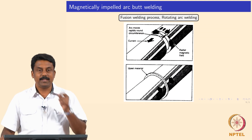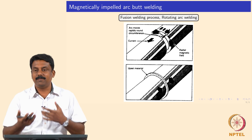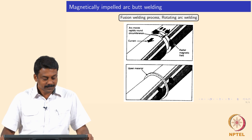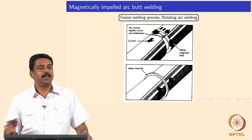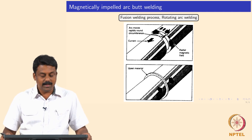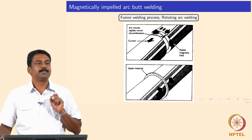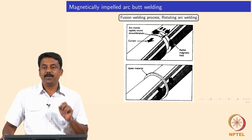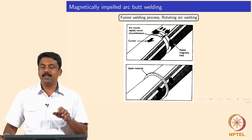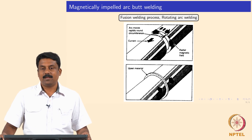Let us go on to the second process. The physics of this process we already covered - the physics of arc and physics of resistance heating. So we will just quickly look at the process characteristics. The second is the Magnetically Impelled Arc Butt welding, and in this case we do not use any filler. We strike an arc between the two faying interfaces, same as in flash butt welding.